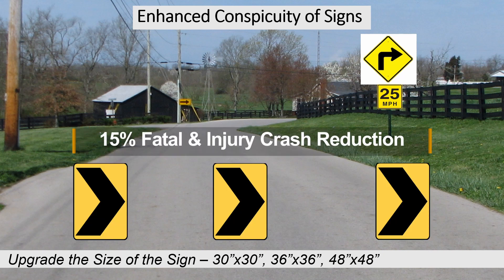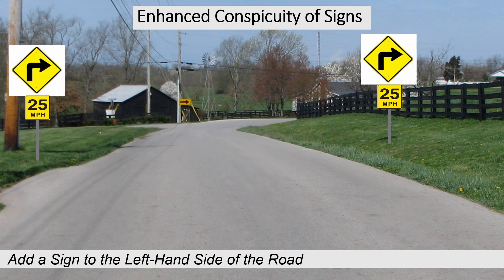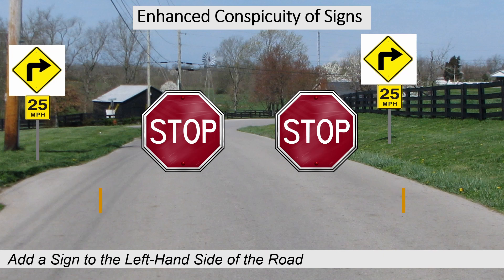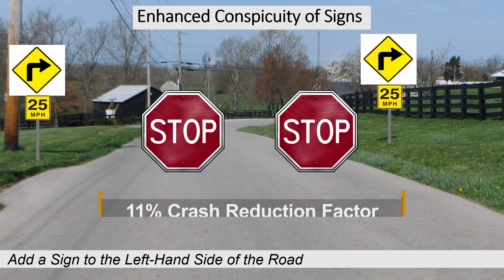Oversized chevron signs result in a 15% reduction in fatal and injury crashes. You can double up the signs by adding one to the left-hand side of the roadway. If you do this, be careful not to place them directly across from each other. You should stagger them so that on a narrow road, you don't create a pinch point. The installation of double stop signs has a crash reduction factor of 11% for all crashes.